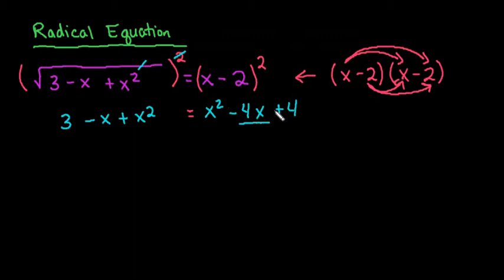So now what we want to do is we want to get all of our information on one side. So if we look at this, if I were to subtract x squared from either side, these end up canceling each other out. So we don't have a quadratic equation for this one. We just have a linear equation, because the x squared terms cancel out.